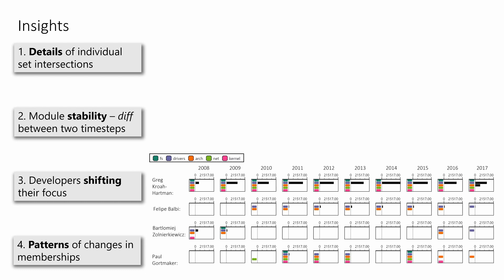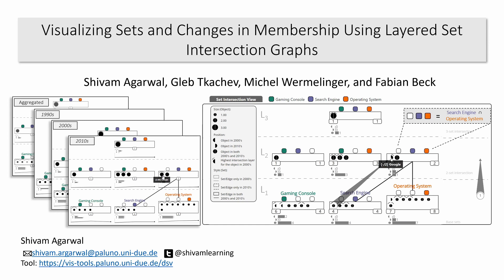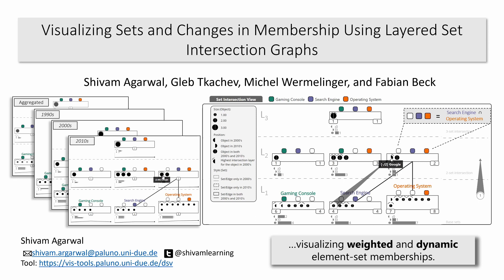Through evolution charts, we observe stable and consistent contribution patterns to two modules by Philippe and to all five modules by Greg. We also see an inconsistent contribution pattern by Paul. Additionally, Bart Lomage contributed in the first and last two time steps with a gap of six years in the middle. Our approach generalizes well to dynamic set data from various domains. To conclude, we present an approach that helps in visualizing weighted and dynamic element set memberships, providing rich insights about the details of element memberships in dynamic sets.